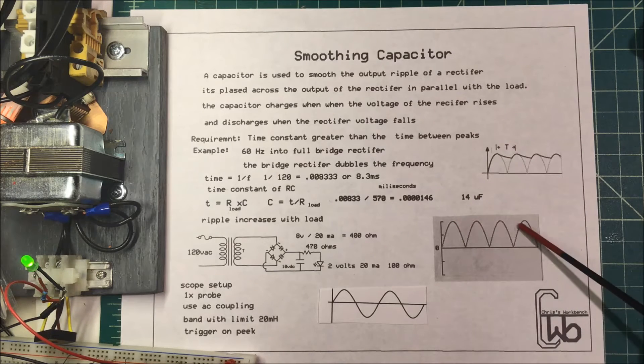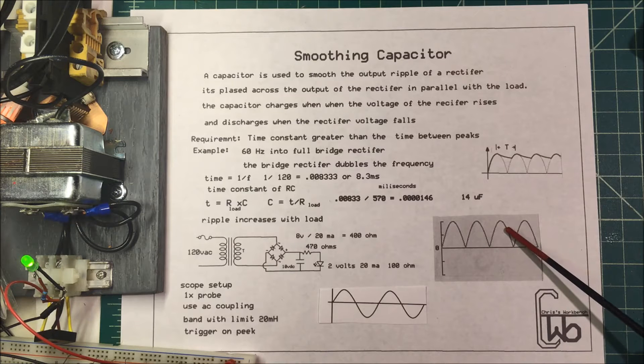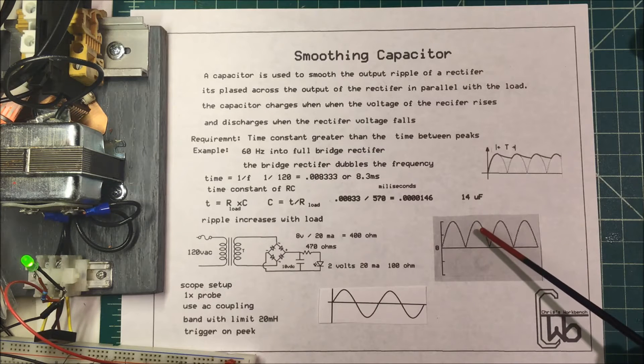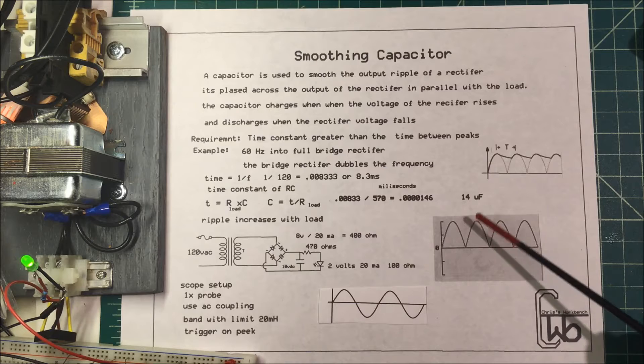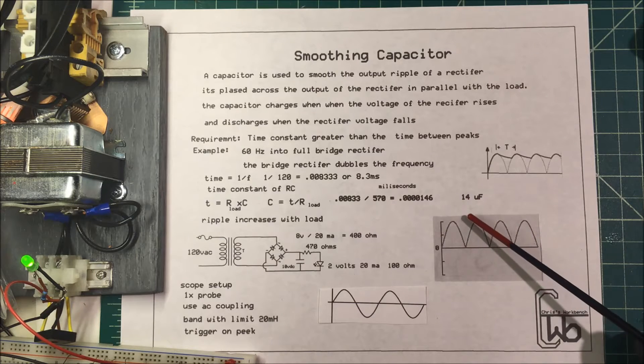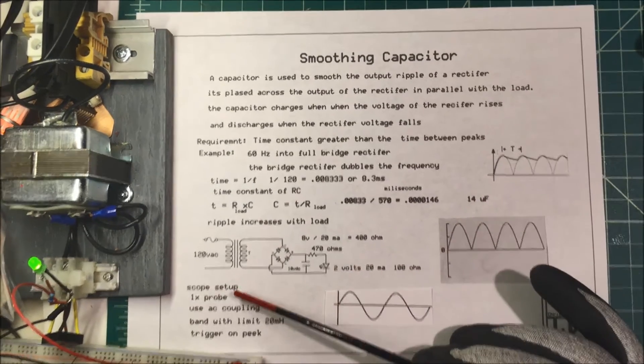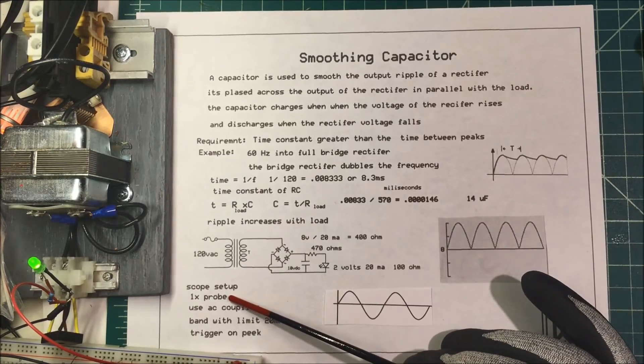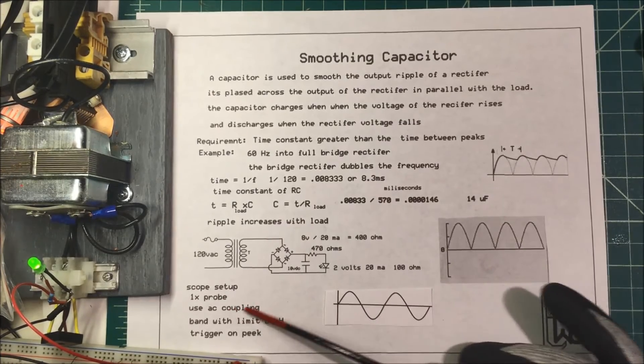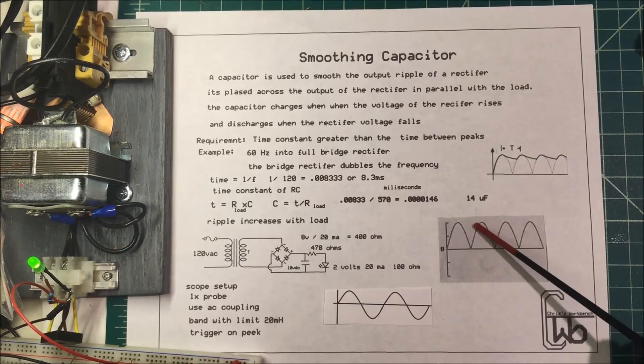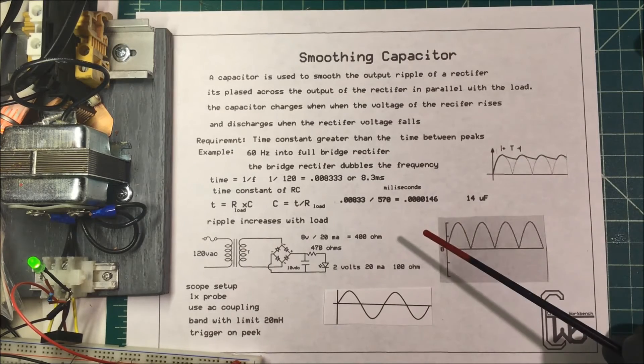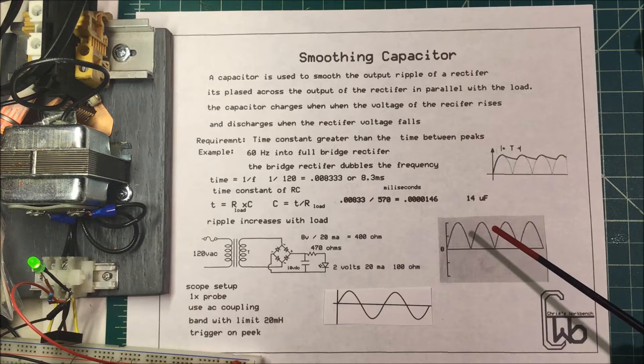We'll take a look at the scope. For the scope I'm going to use a times one probe with AC coupling. I don't want to see any DC, just the AC, and I'm triggering off the peaks.